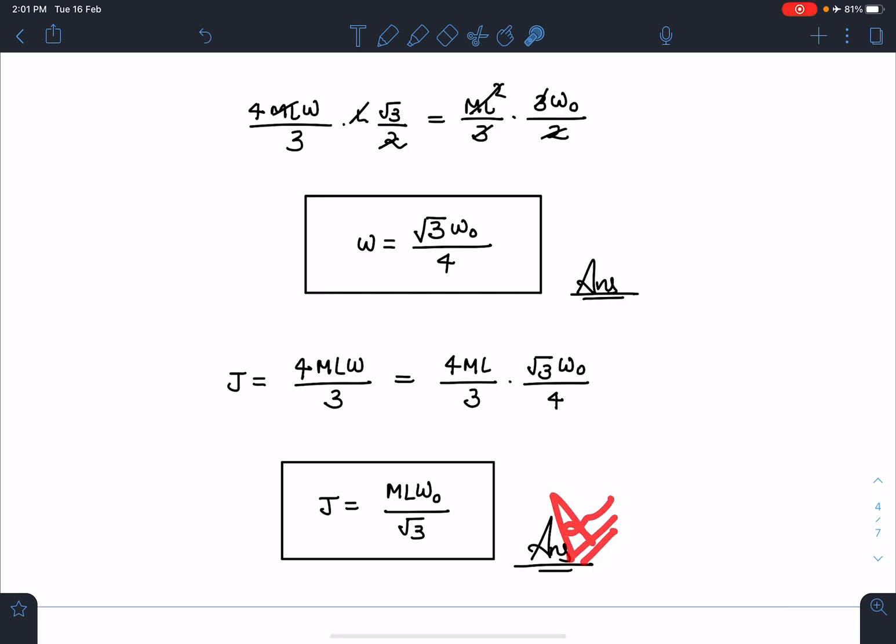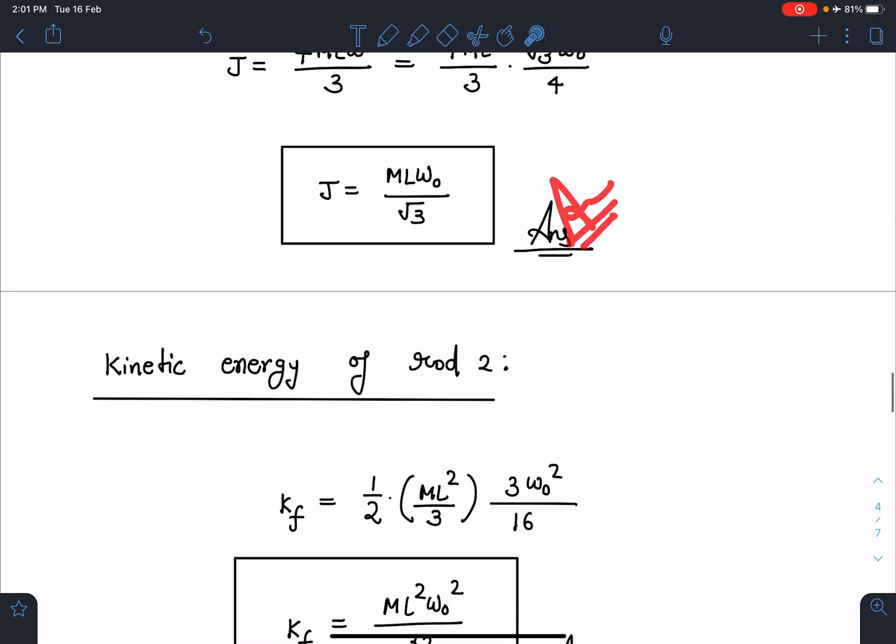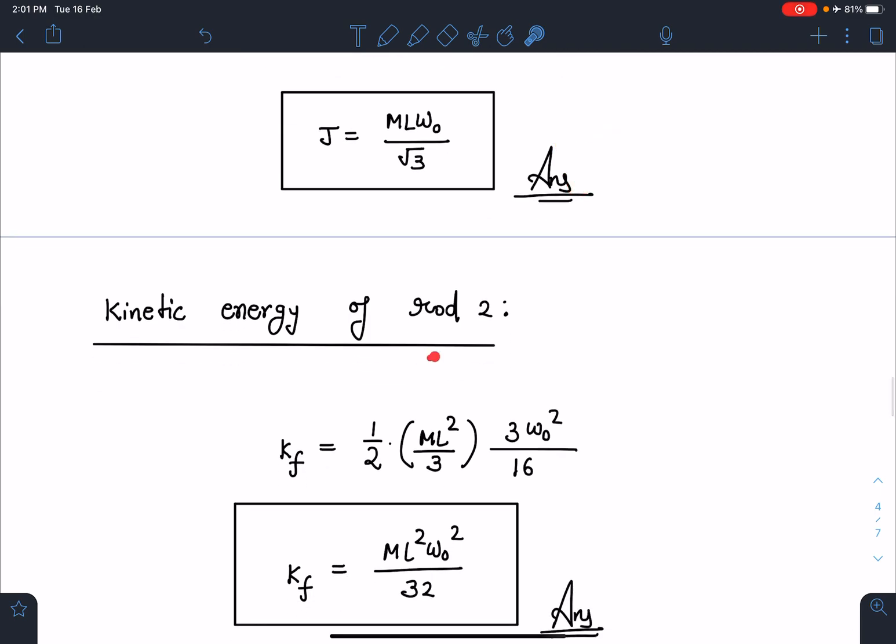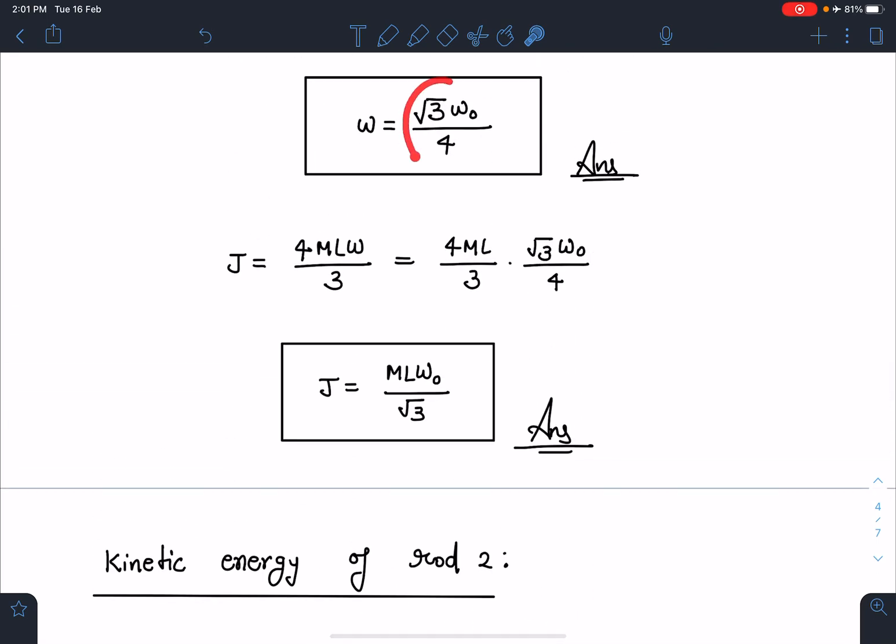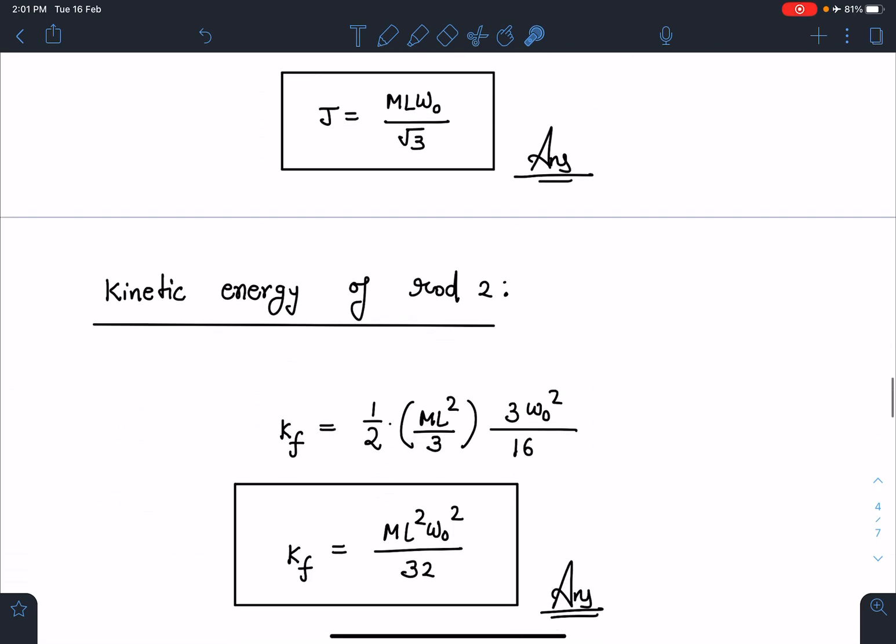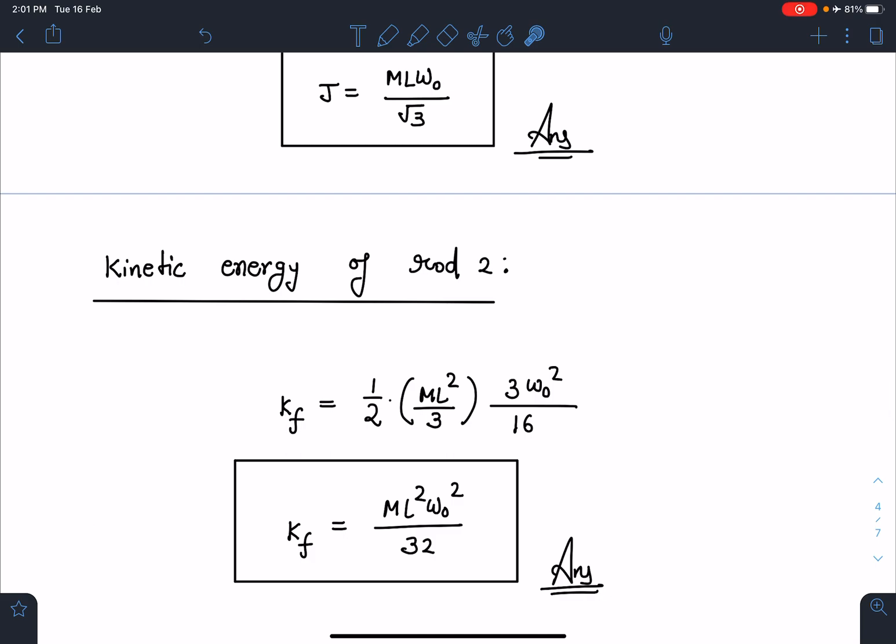Similarly, kinetic energy of rod 2 I can write as half I omega squared of rod 2. Half moment of inertia about that axis is ML square by 3, and its omega is omega square. That will become 3 omega naught square by 16, so 3 and 3 get cancelled. You will be getting K final as ML square omega naught square by 32. This is the answer for the third part.